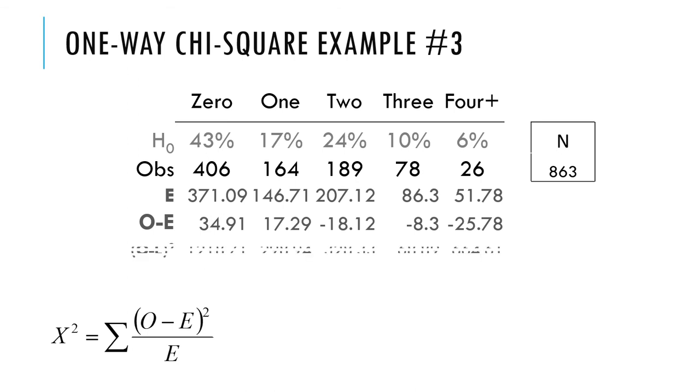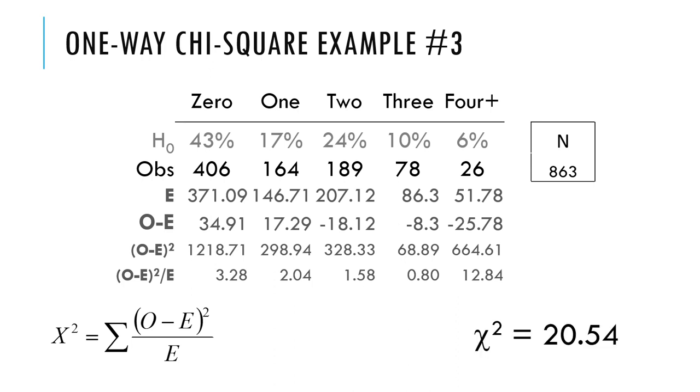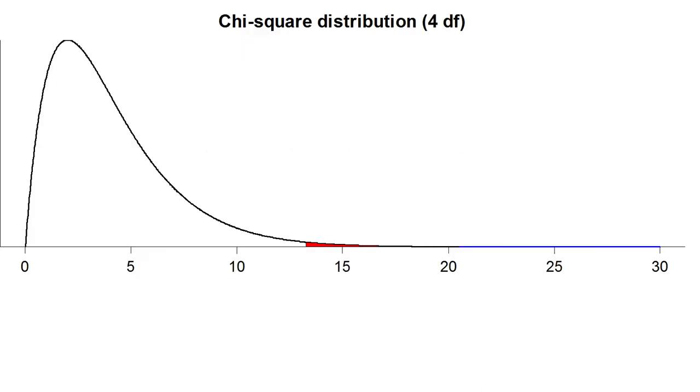Then it's just a matter of subtracting observed minus expected, squaring, and then dividing by expected. Add all those things together and you get a chi-square of 20.54. You might say, oh my gosh, that's huge. But sometimes you need very big chi-squares to reject the null hypothesis. Alpha is 0.01. Our critical chi-square was 5.99 for 2 degrees of freedom. And then our observed chi-square was 20.54. That is deep in the rejection region there. So we're going to reject the null hypothesis.